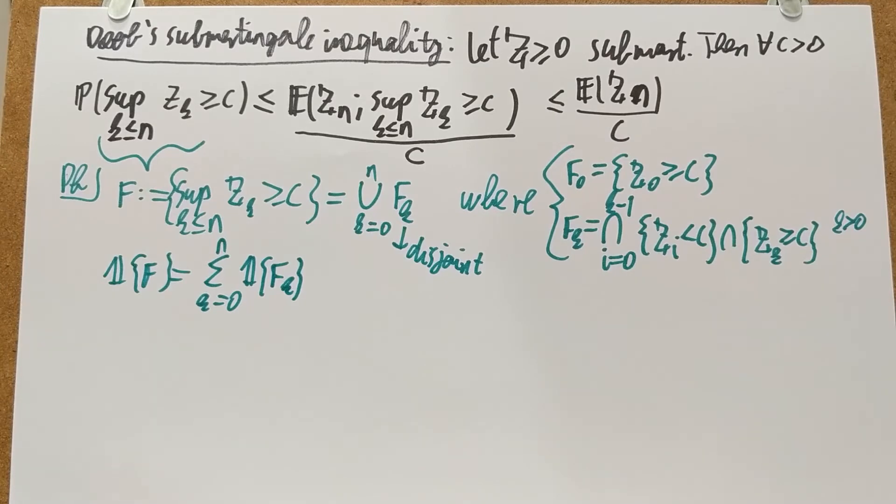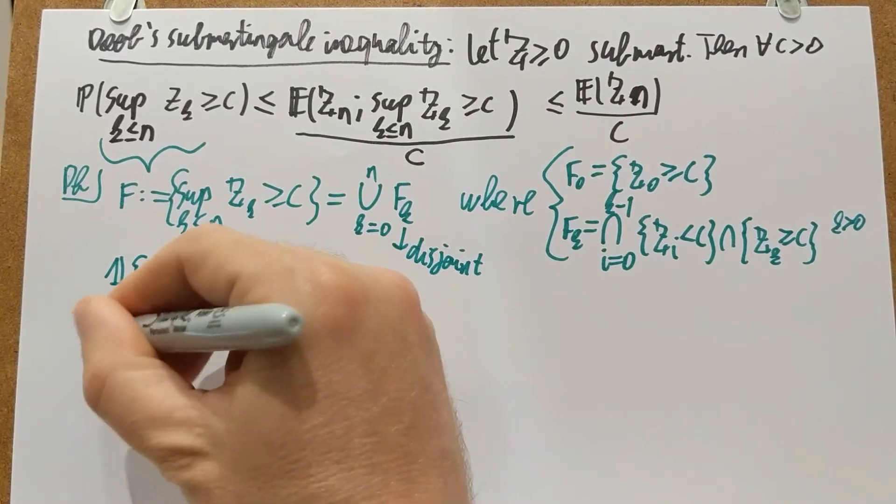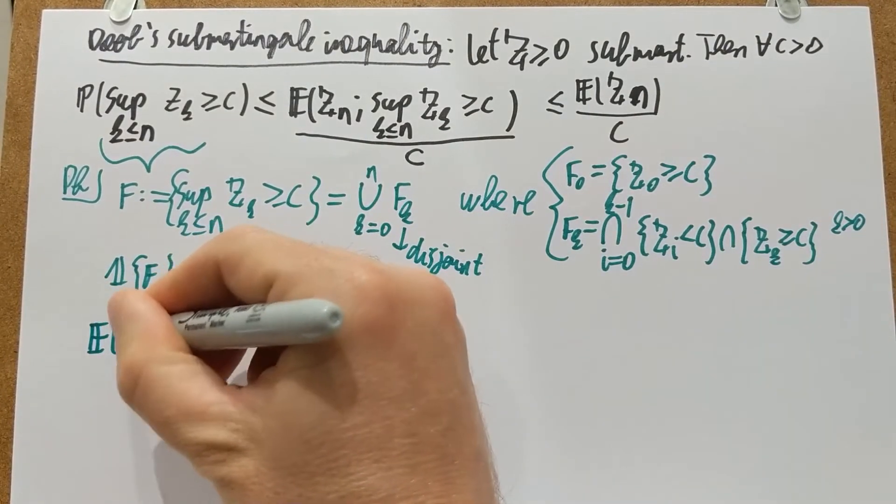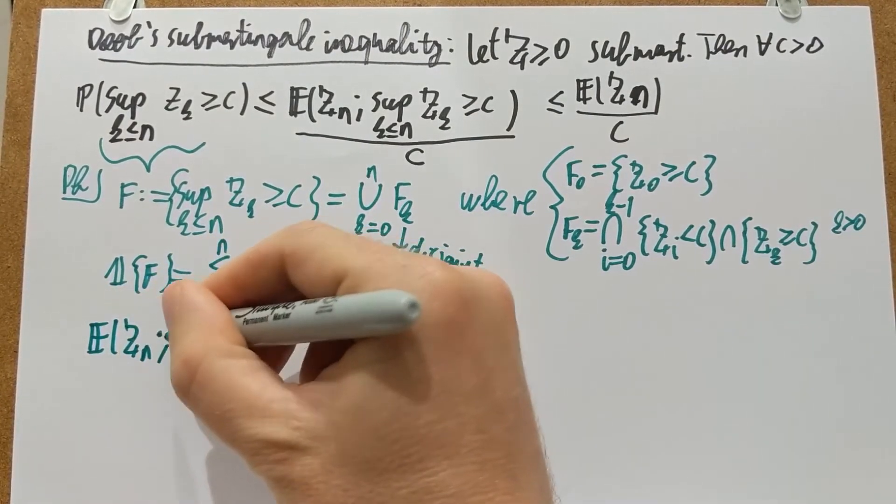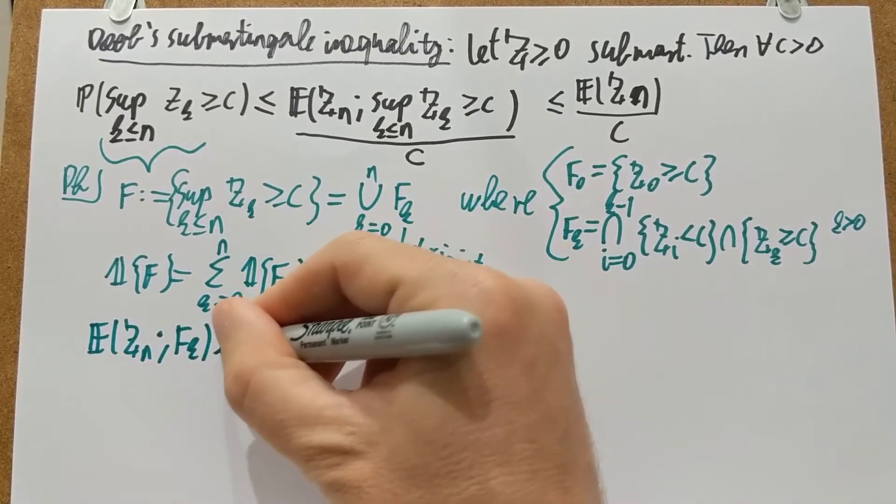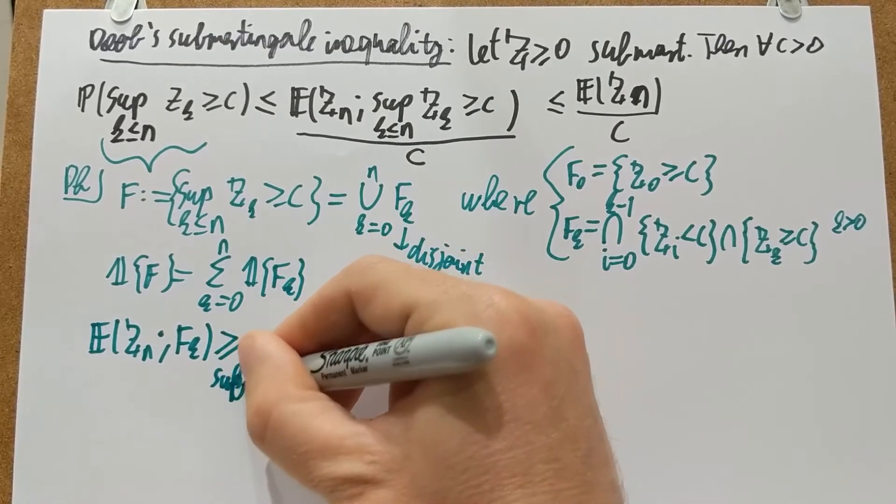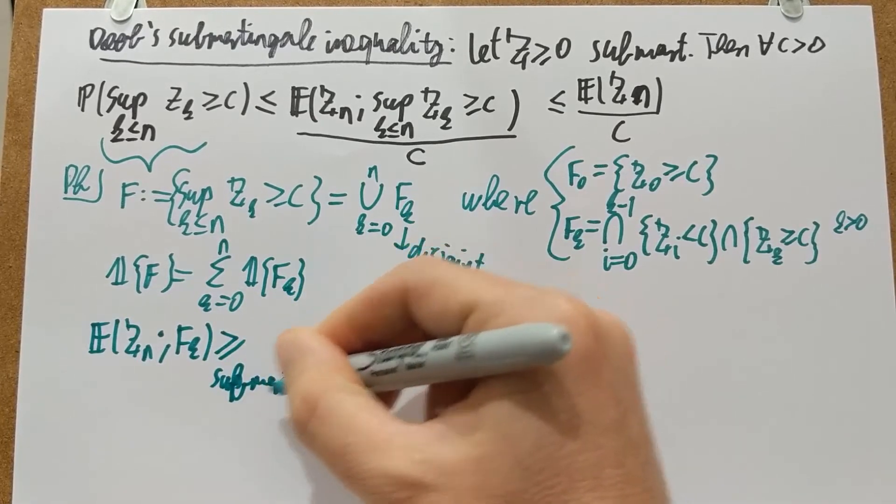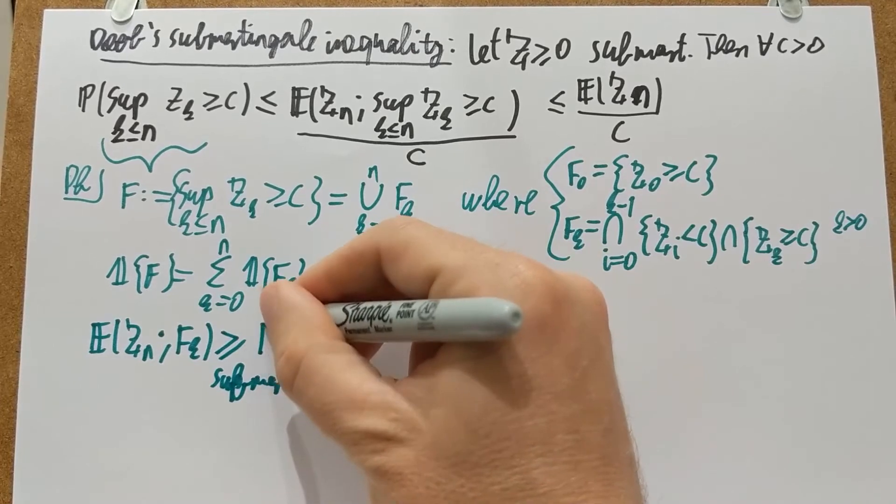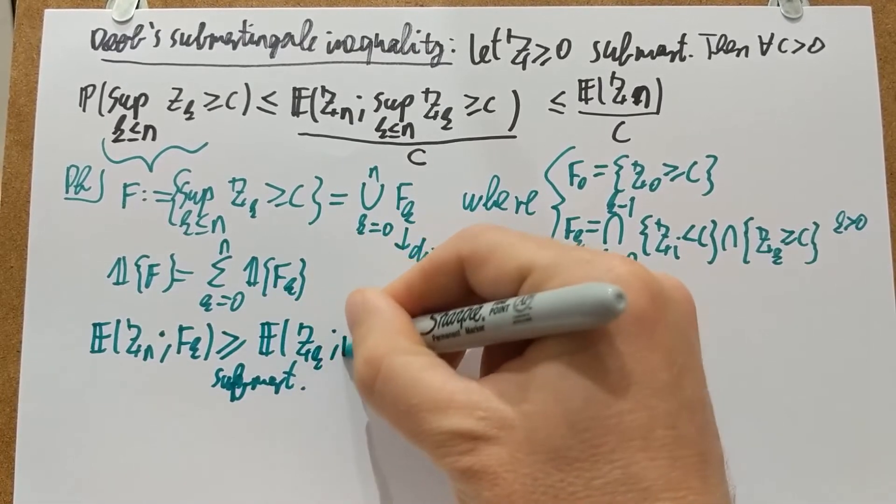And once we had all that, then the proof is now quite straightforward. Take the expectation of Z_N on F_K, and notice that by this submartingale property, this is larger than or equal to the expectation of Z_K over F_K.